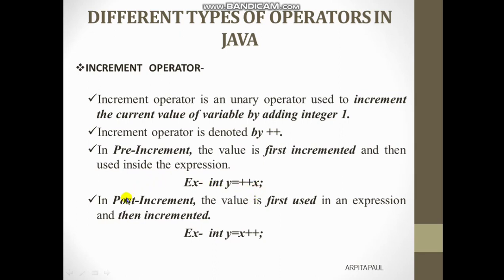In case of post-increment, the value is first used in an expression and then incremented — the reverse of pre-increment. We write it like: int y = x++. That means the old value of x is used first, and then the value will be incremented after execution. This is how the increment operator works.